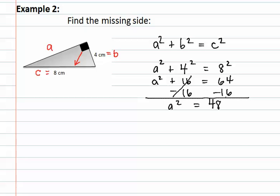We now have isolated the variable, so we can take the square root of both sides. The square root of A squared is A. The square root of forty-eight is six point nine three, if we are rounding to the hundredths. Remember to include your units or the centimeters.